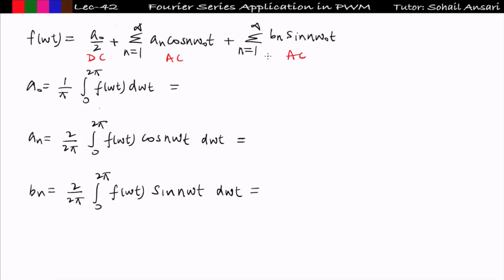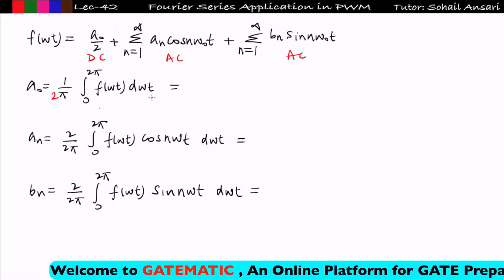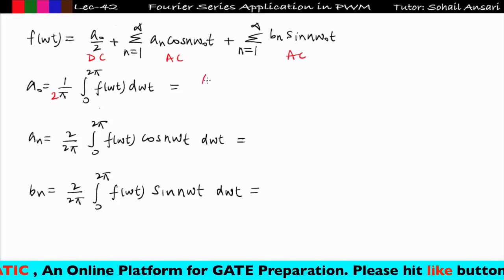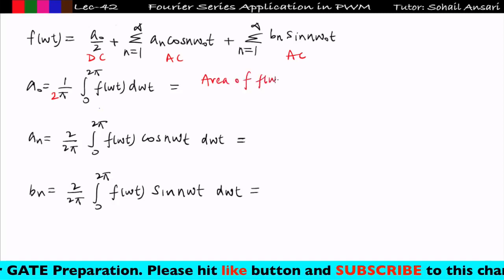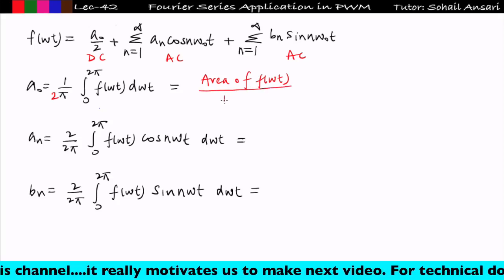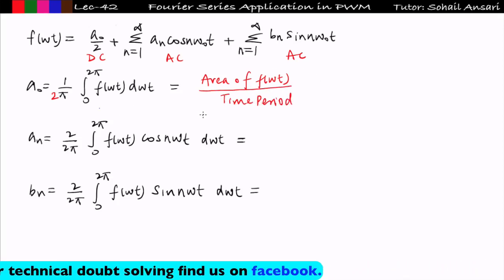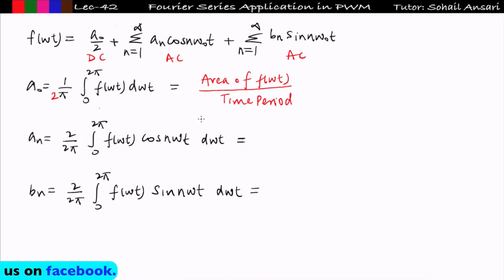The terms a₀, aₙ, and bₙ are known as Fourier series coefficients, which can be found using formulas. a₀ is equal to 1/(2π) times the integral from 0 to 2π of f(ωt) dωt — this is nothing but the area of f(ωt) divided by the time period. So whenever any function is given, just find the area of that function and divide by the time period to get a₀. There is nothing requiring a very big calculation.